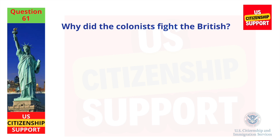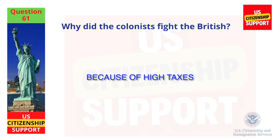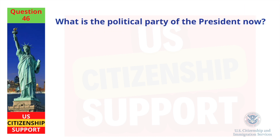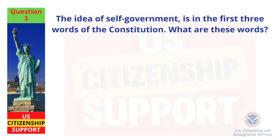Why did the colonists fight the British? Because of high taxes. In what month do we vote for President? November. What is the political party of the President now? Democratic Party. The idea of self-government is in the first three words of the Constitution. What are these words? We the people.